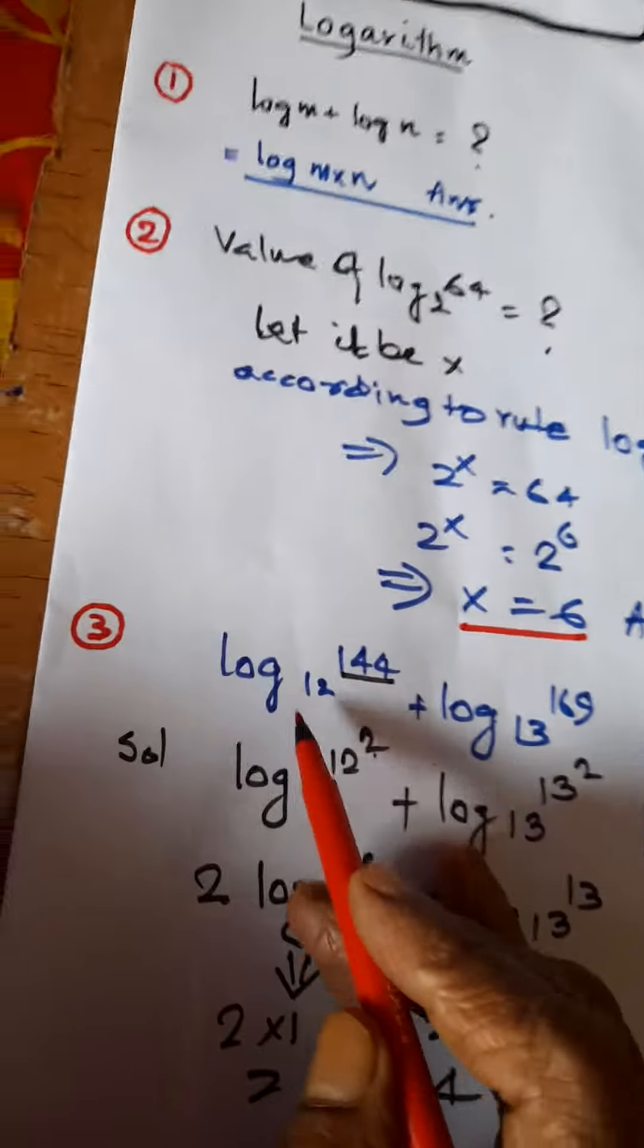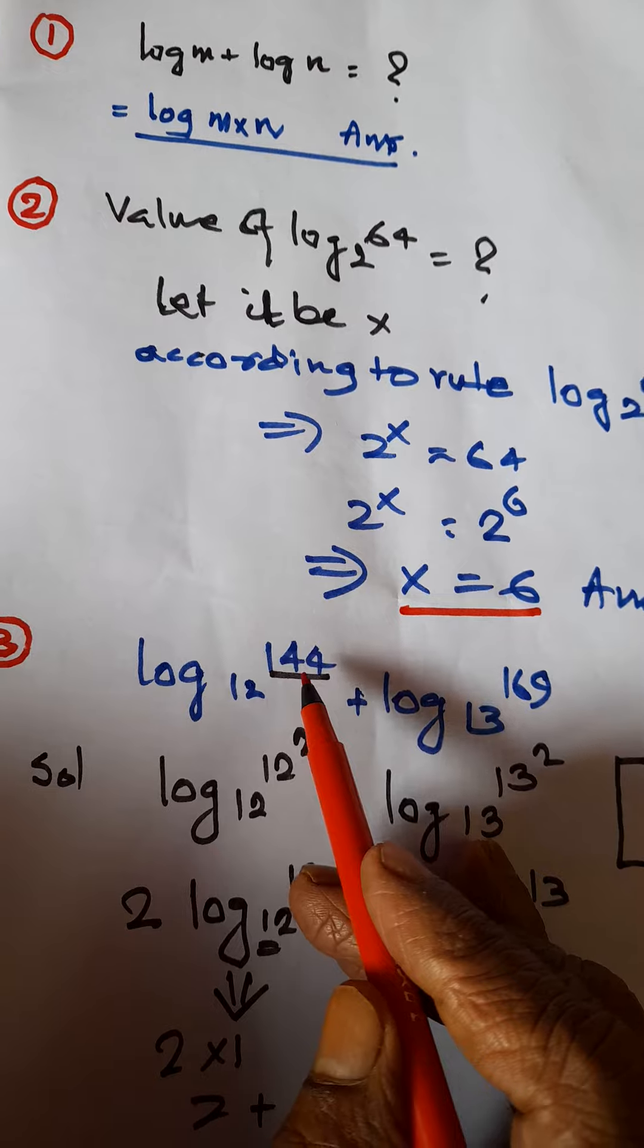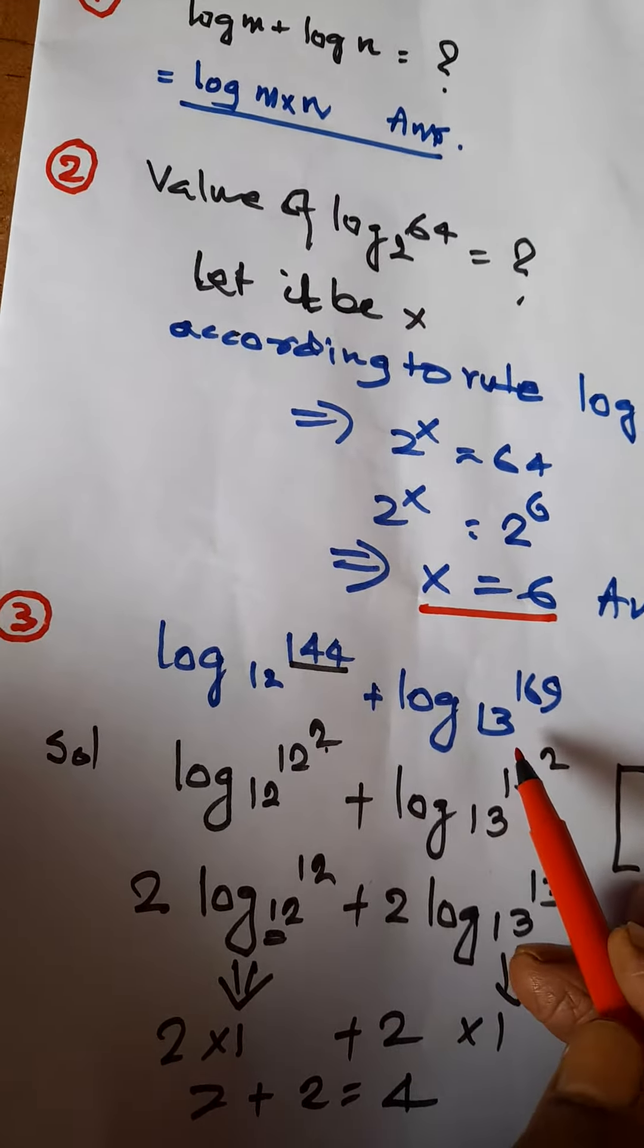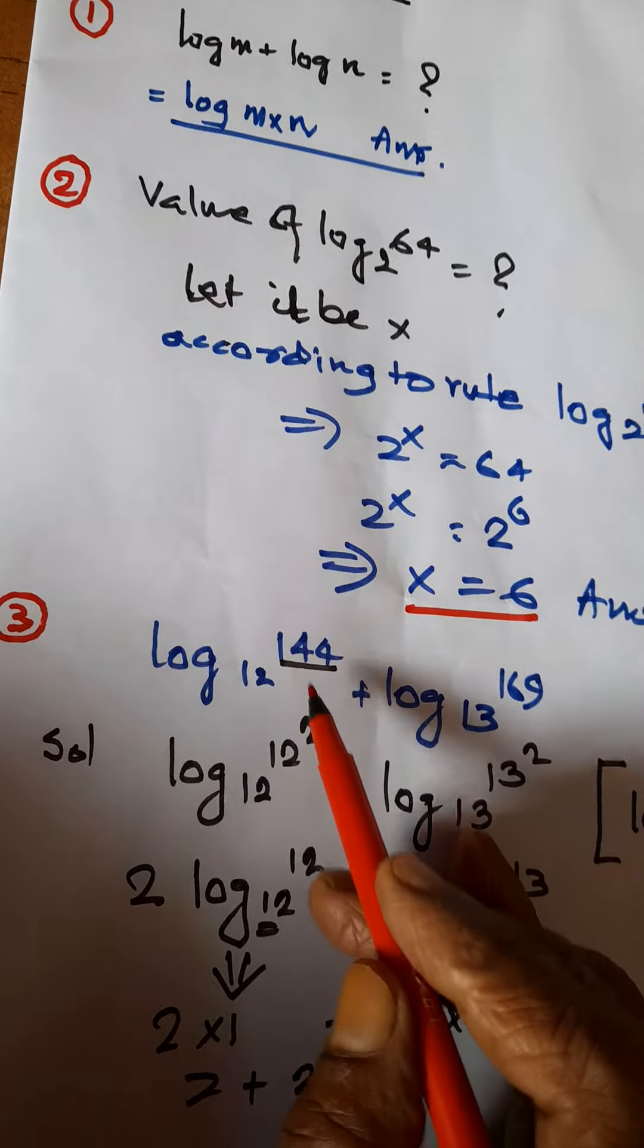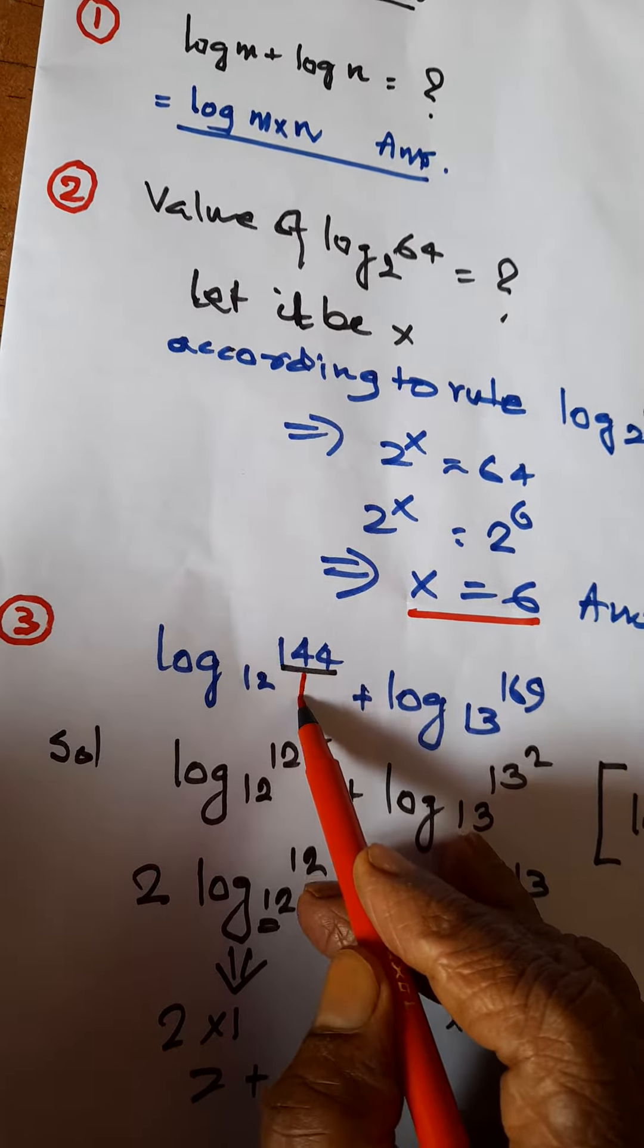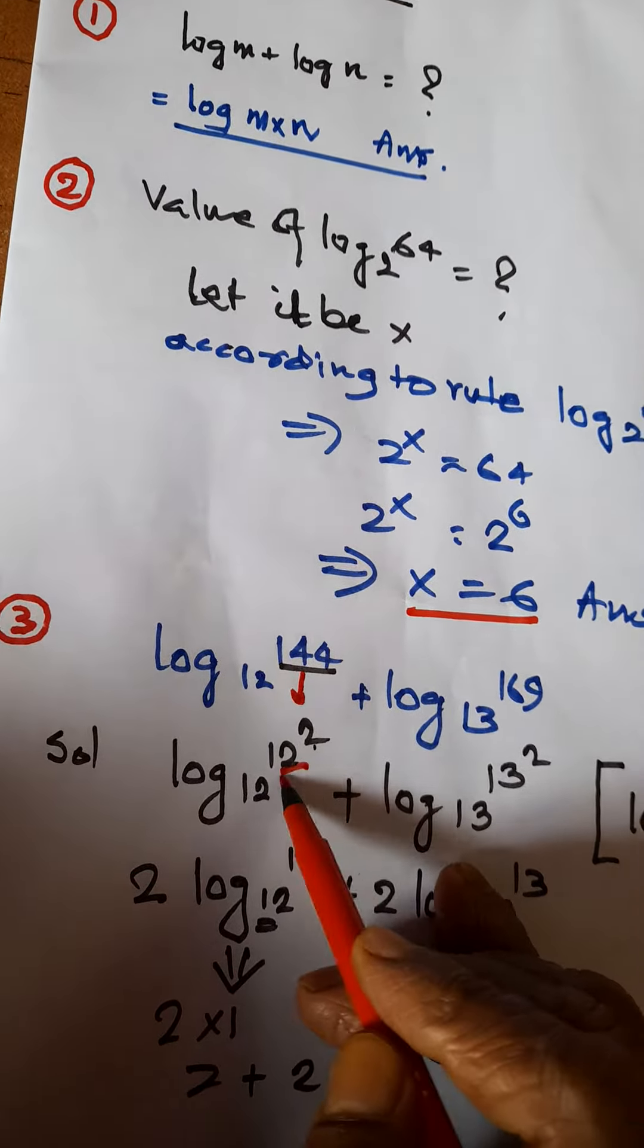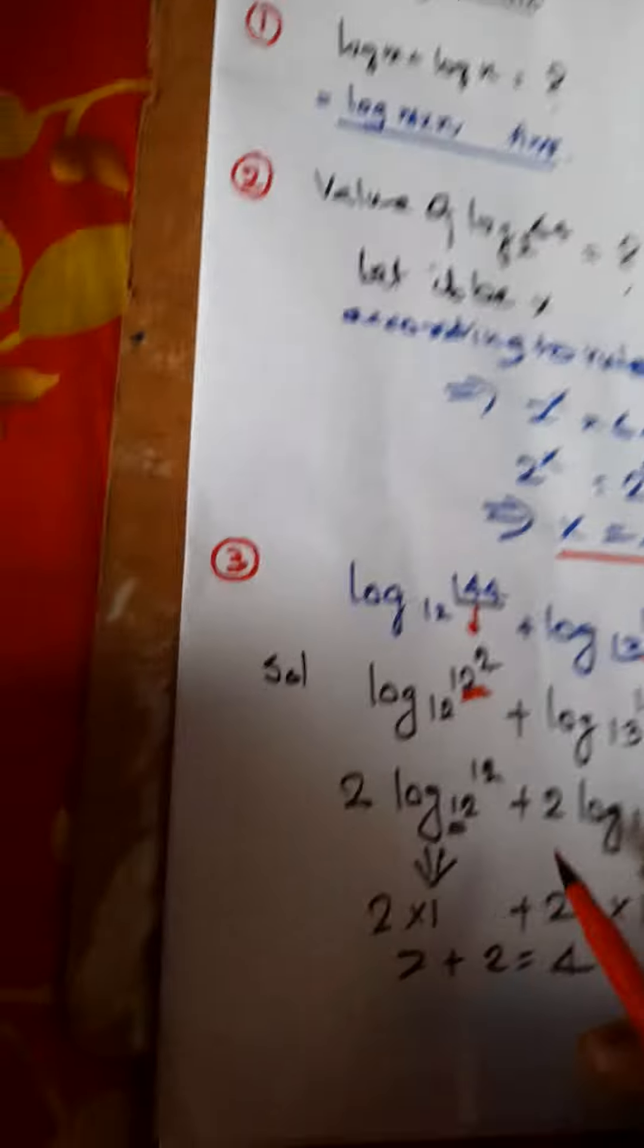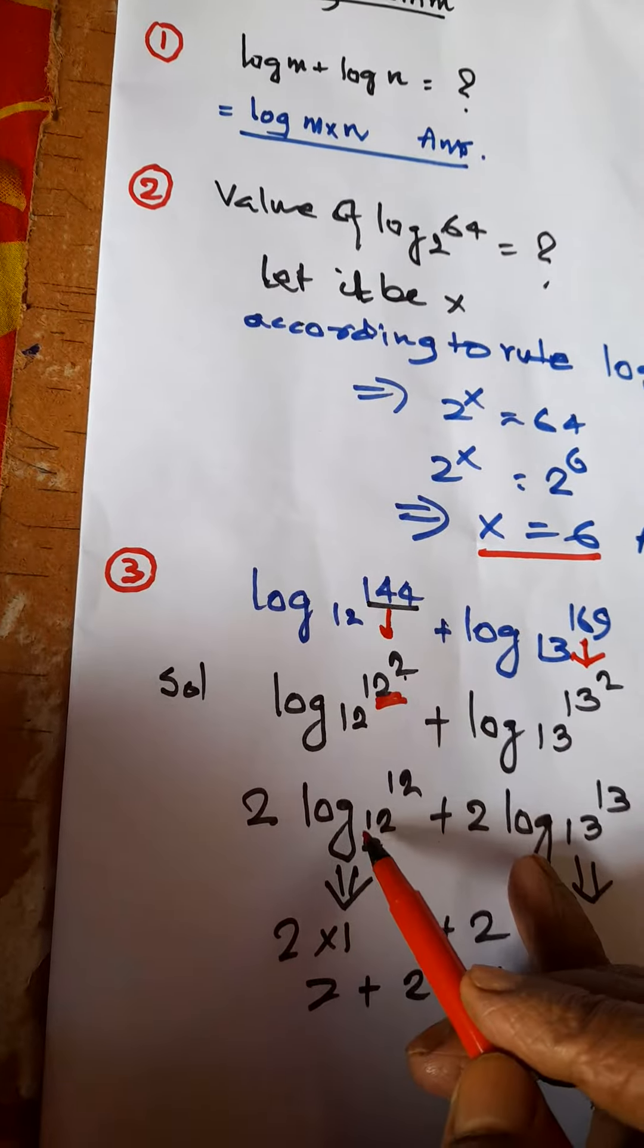The next question is a bit tough. What is log base 12 of 144 plus log base 13 of 169? You can write 144 = 12² and 169 = 13². So it becomes 2·log₁₂12 plus 2·log₁₃13.